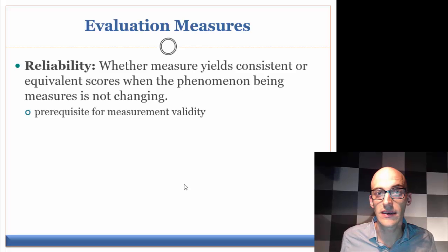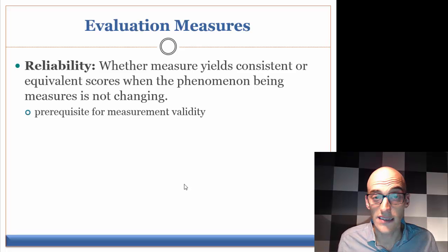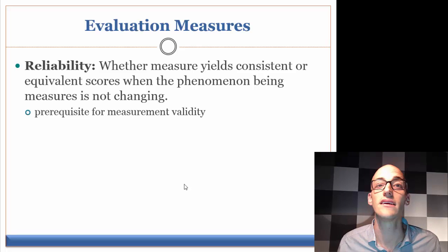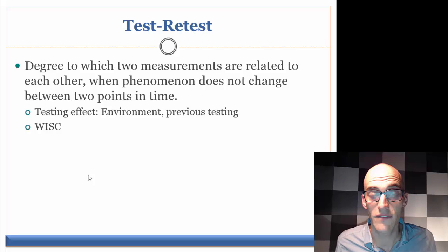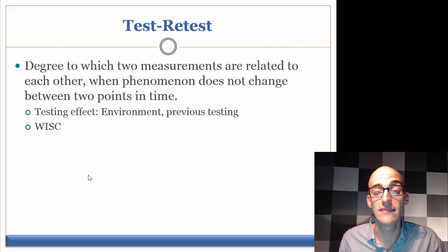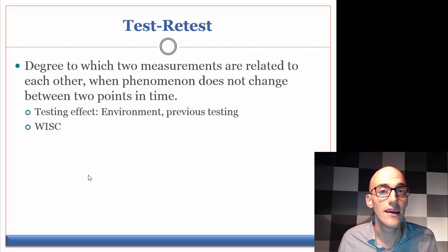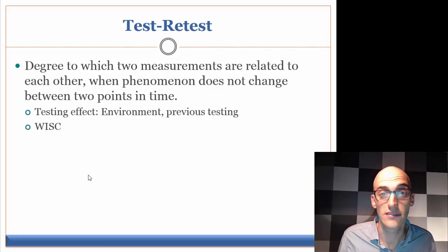An example: measuring someone's intelligence by their head circumference would be a reliable measure — you can measure it consistently — but it wouldn't be valid because head circumference doesn't tell you anything about intelligence. The different types of reliability researchers consider include test-retest reliability, which is the degree to which two measurements are related. If I measure your intelligence at time A, it should correlate strongly with your intelligence at time B if the test has strong test-retest reliability.